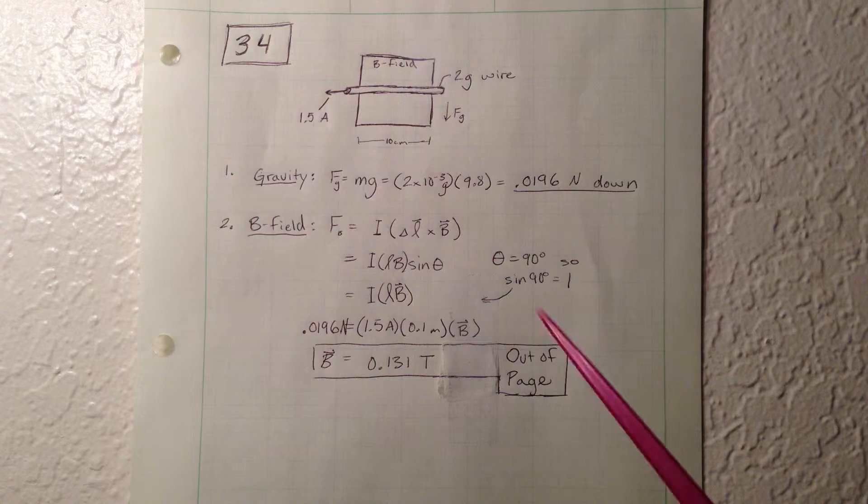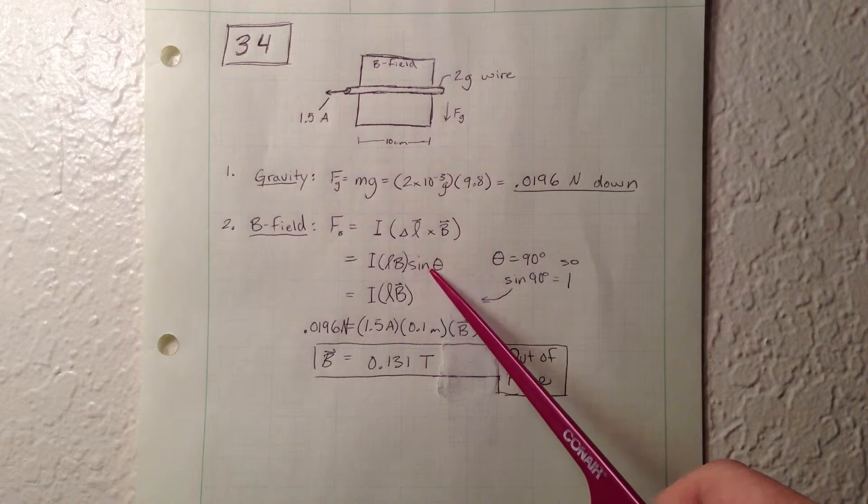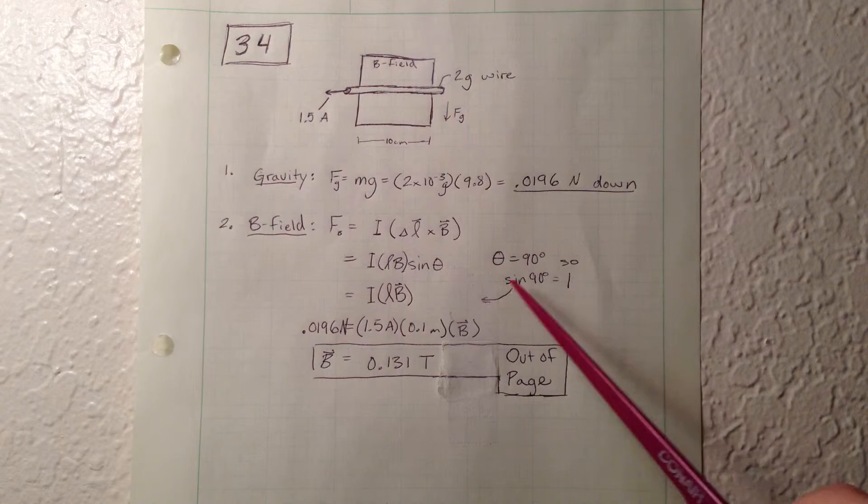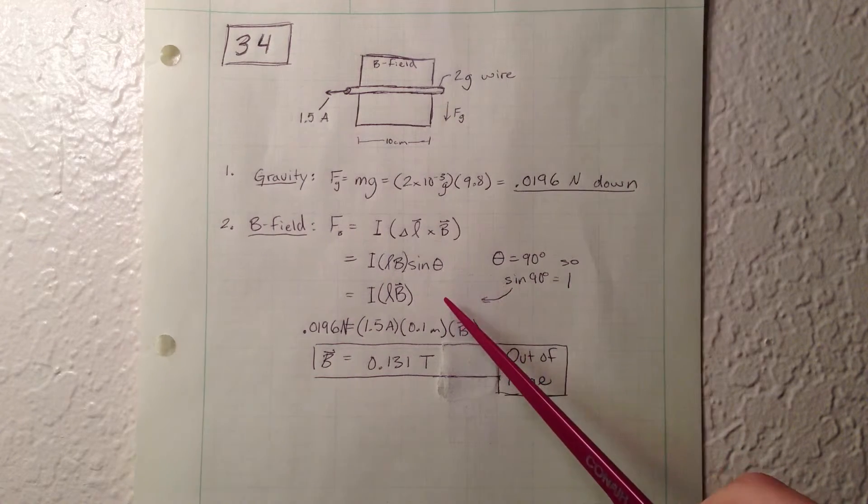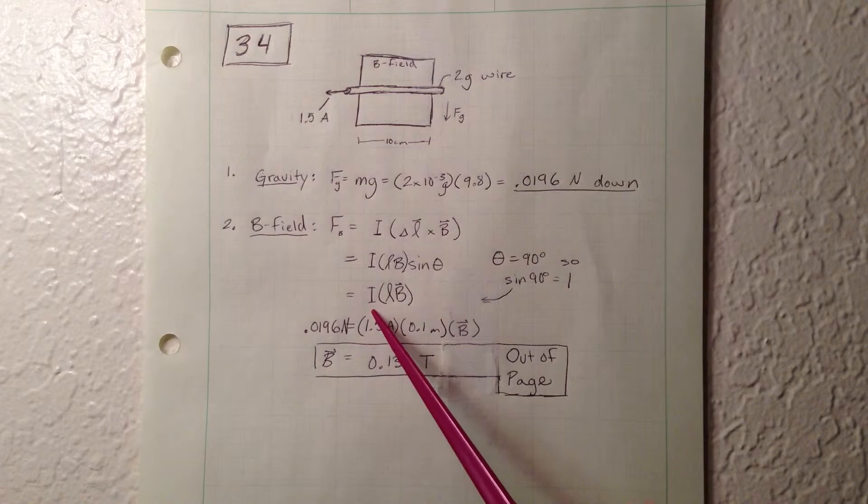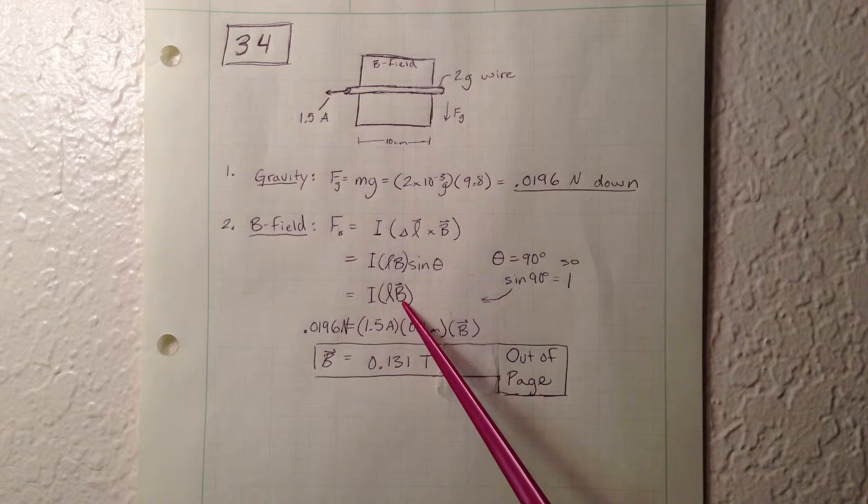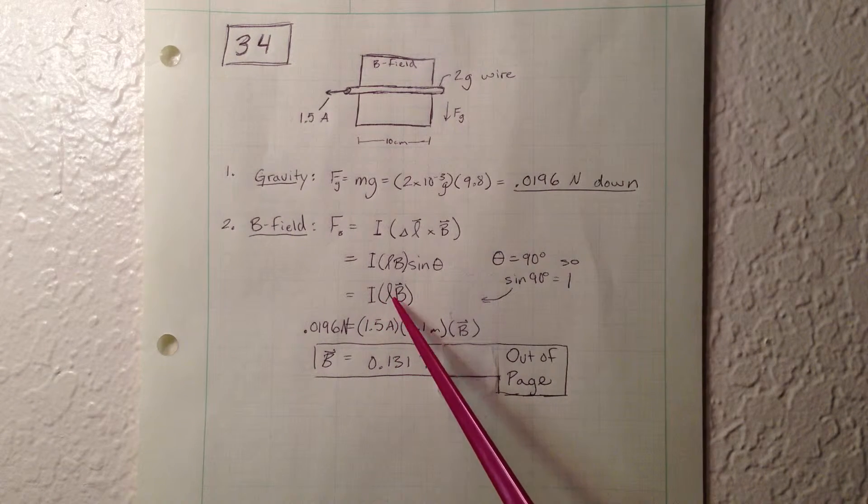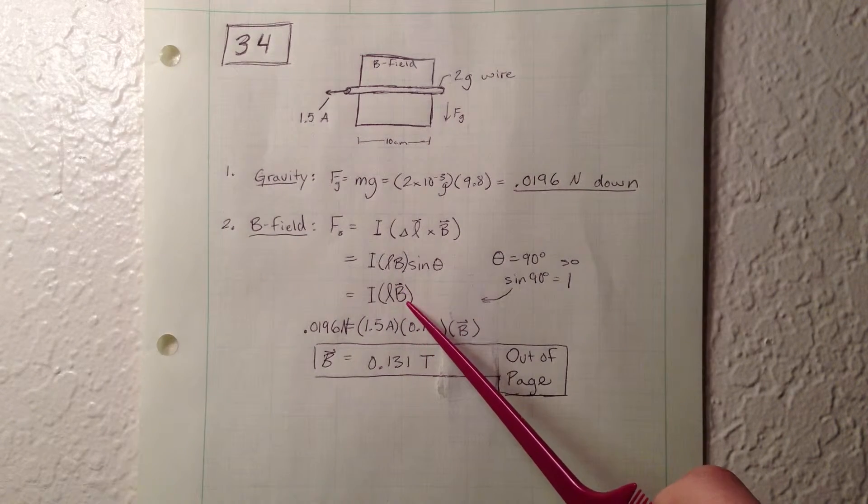So what we do is we can get rid of sine theta because we know it's 90 and that just ends up being 1. So we can disregard that. And then we have the force of the B field equals current times length times the B field. And we have three of the four variables which will allow us to solve for the B field.